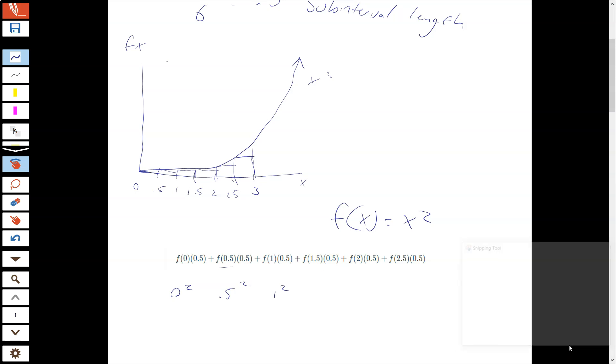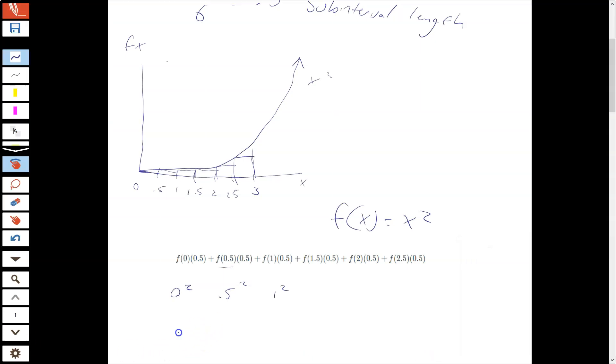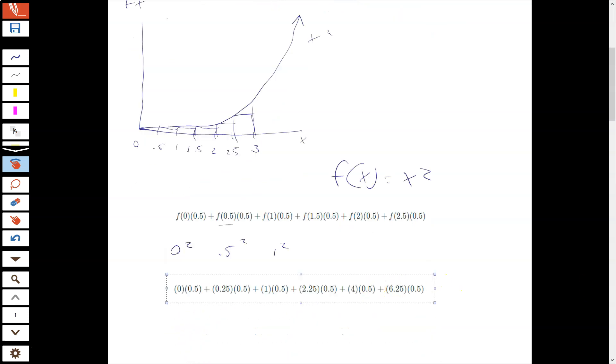So knowing f of x is equal to x squared, I then just work my way through this. So this is going to be 0 squared times 0.5. This is going to be 0.5 squared times 0.5. This is going to be 1 squared times 0.5, and so on. So here we've already squared all of those values. And then you're just going to simplify those and solve. So what I get here is 6.875.